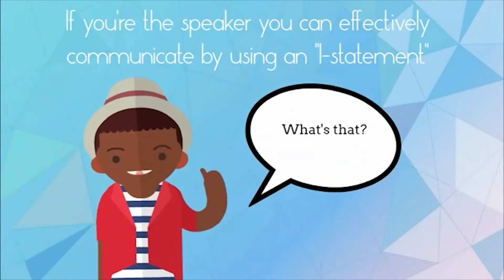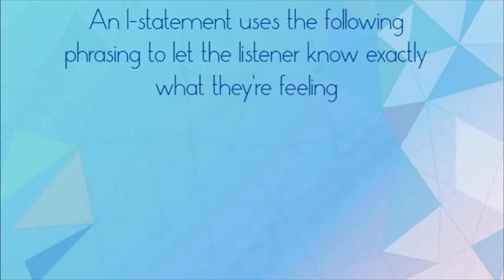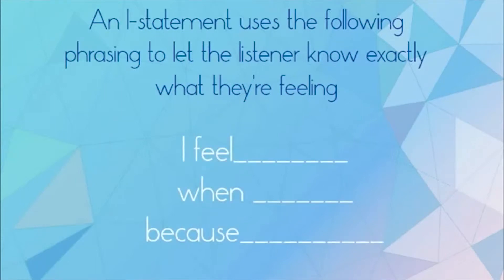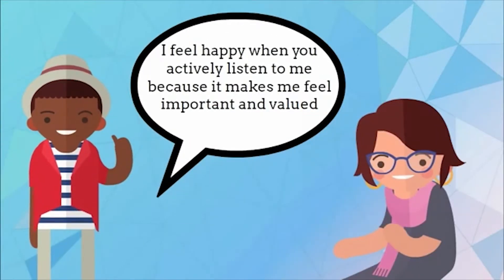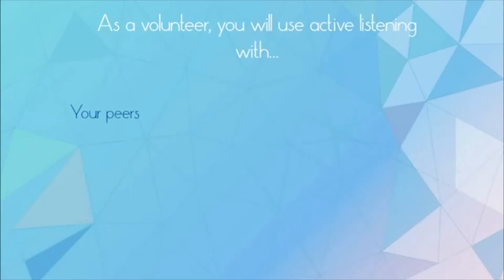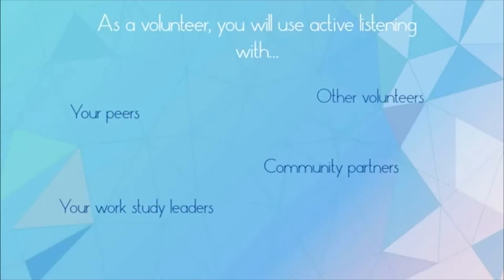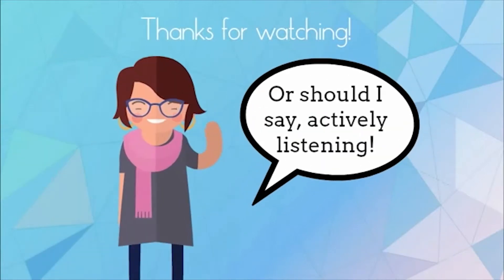If you're the speaker, you can effectively communicate by using an I statement. An I statement uses the following phrasing to let the listener know exactly what you're feeling: 'I feel... when... because.' For example: 'I feel happy when you actively listen to me, because it makes me feel important and valued.' As a volunteer, you will use active listening with your peers, community partners, your work-study leaders, and other volunteers with different community groups. Thanks for watching — or should I say, actively listening.